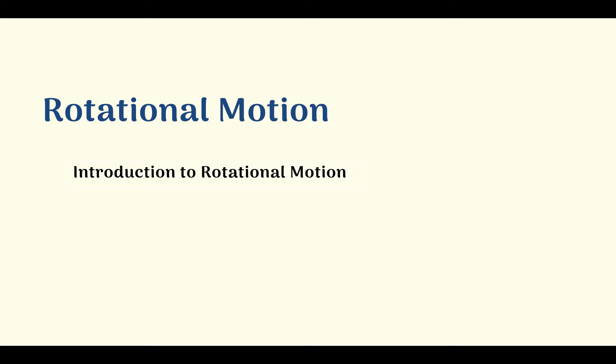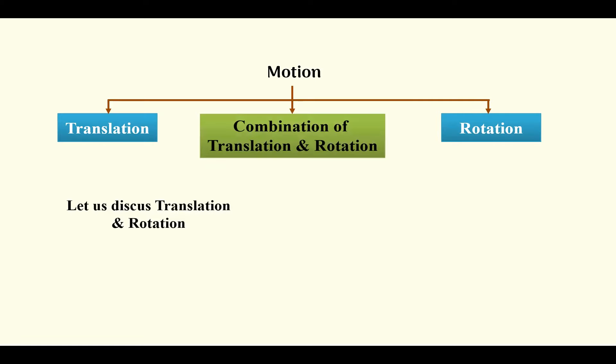Now let's understand the concept of introduction to rotational motion. Motion can be classified into three kinds: the first is motion in a straight line called translatory motion, second is rotational motion, that is motion about a fixed axis or a fixed point, and the third is a combination of translatory and rotational motion.